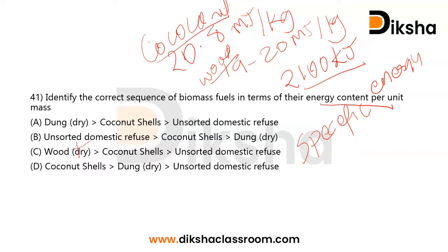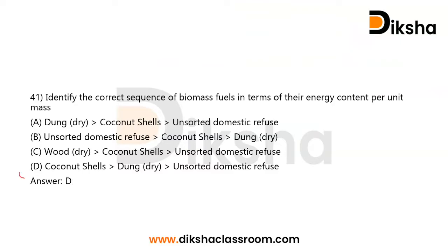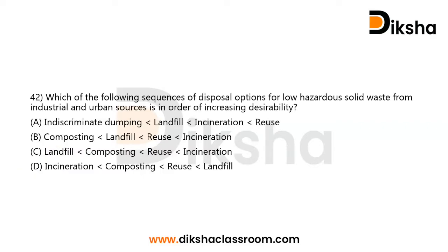So we have coconut shell first, then wood, then dung. There is no option with coconut and wood in the correct order except option D — coconut shell, dung, and domestic refuse — in terms of increasing energy content per unit. So option D is the correct answer for this question. Moving to the next question: which of the following sequences of disposal options for low-hazardous solid waste from industrial and urban sources is in order of increasing desirability?